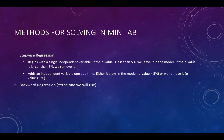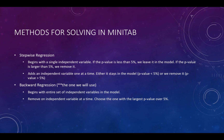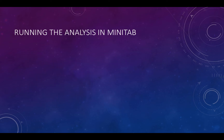Backward regression is the method we are going to use in this course — it is a little bit easier and more intuitive. In this method, we begin with the entire set of independent variables in the model, putting in all of the x's. Then we remove an independent variable one at a time, choosing the one with the largest p-value over 5%. We continue until all remaining independent variables are significant. Minitab will handle this process for us.